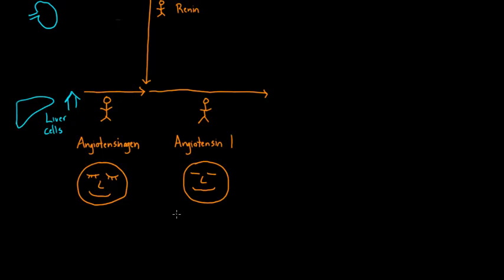Angiotensin 1 now floats through blood vessels. Blood vessels have cells lining them. These are the endothelial cells—the cells that are lining the blood vessel on the inside.